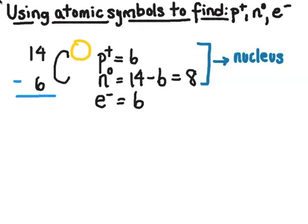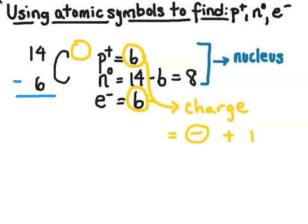To recap: the nuclear structure — the number of protons and neutrons in the nucleus — is given by the mass number and the atomic number. We use those to find the actual structure of the nucleus. If I want to look at the charge, I compare the number of protons with the number of electrons, indicated by that area to the upper right of the symbol. For carbon-14, summing 6 negative electrons and 6 positive protons gives an overall charge of 0. These symbols give us a lot of information about nuclear structure as well as charge.